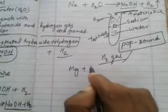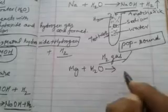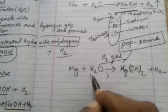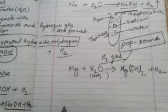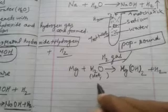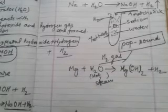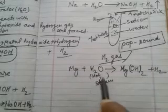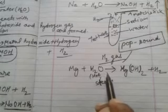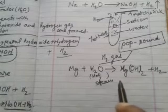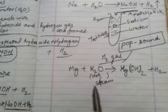Magnesium also reacts with water — it forms magnesium hydroxide (Mg(OH)₂) and hydrogen gas is formed. But here the water must be in hot form for the reaction to be performed vigorously; otherwise, in cold water, the reaction formation is slow as compared to hot or steam water.